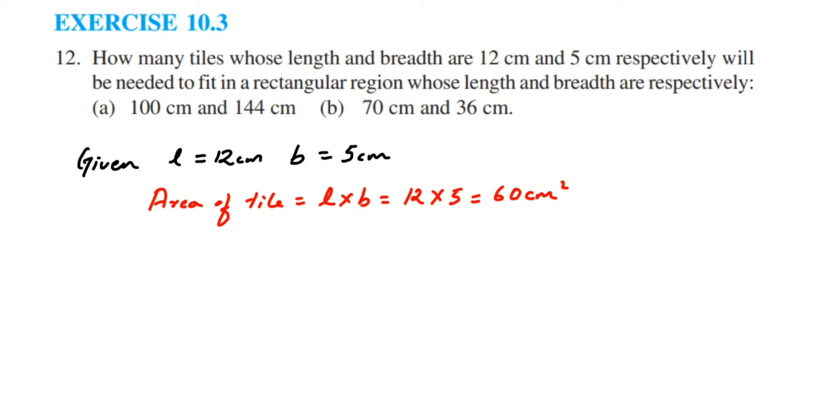Now we have to find out for the first question. Area of the rectangle region where length is equal to 100 cm and breadth is equal to 144 cm. Now it's a rectangle, right? So I'm going to directly find out the area of the region. So area is equal to length into breadth. So 100 into 144, which will be equal to 14400 cm square.